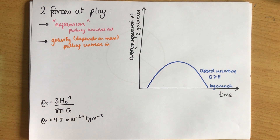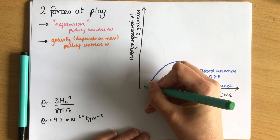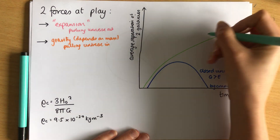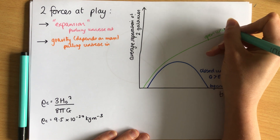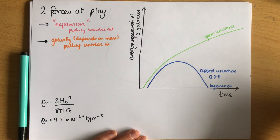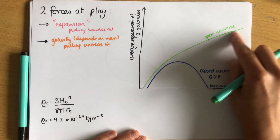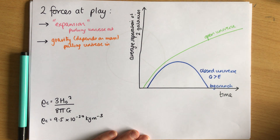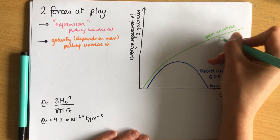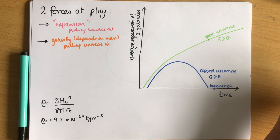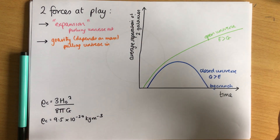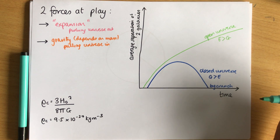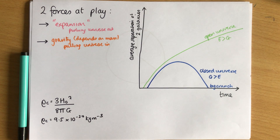The opposite is the open universe, where the two galaxies keep expanding forever - always getting further and further apart. For this to happen, expansion must beat gravity. The open universe occurs when there is less mass in the universe than expected, so expansion wins.